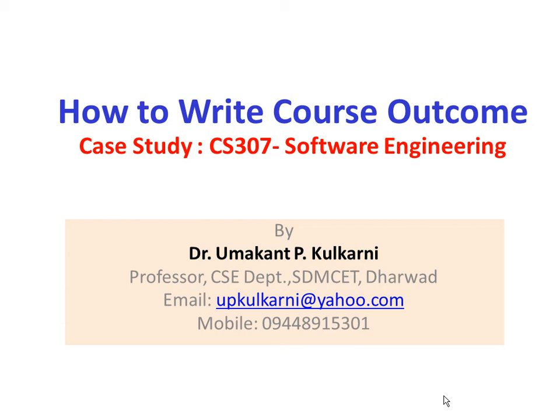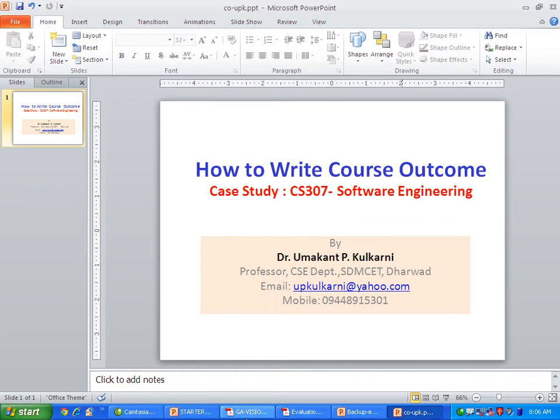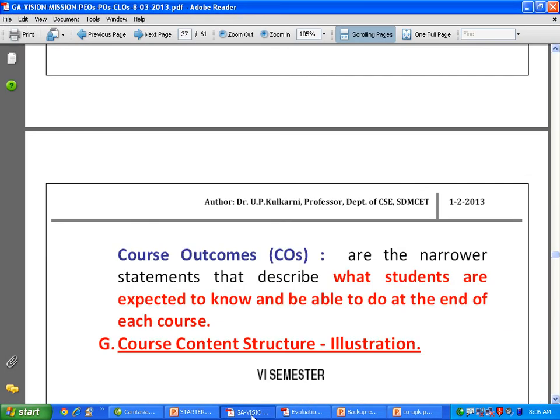We take a case study on CS 302, that is Software Engineering, and look into how to write course outcomes. Before that, let's look into what exactly a course outcome is. Course outcomes are statements that describe what students are expected to know and be able to do at the end of each course.